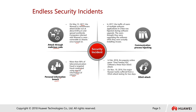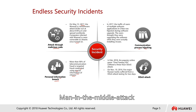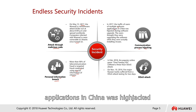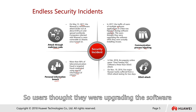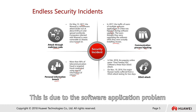Communication process hijacking — sometimes called a man-in-the-middle attack. In 2017, the traffic of users of multiple software applications in China was hijacked during a software upgrade. The users thought they were upgrading their software, but they were actually installing viruses. This is due to a vulnerability in the software application.